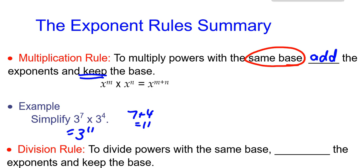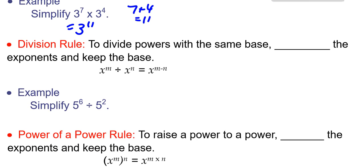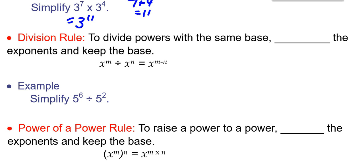The next rule was the division rule. Again, really important here to notice that we are dividing powers with the same base. When we're doing that, we subtract the exponents and keep the base. For example, 5^6 ÷ 5^2 becomes 5^4 because 6 - 2 is 4.